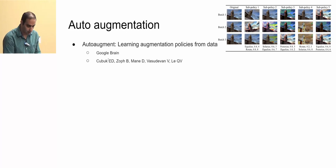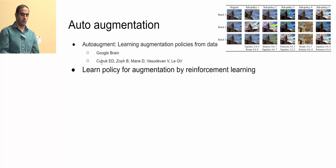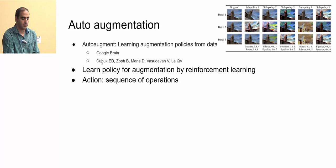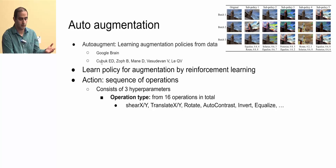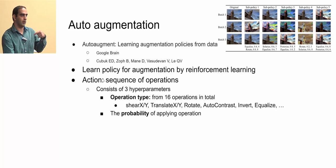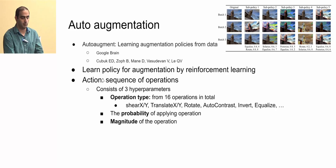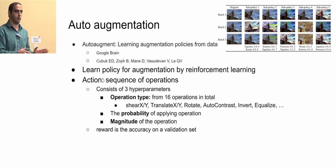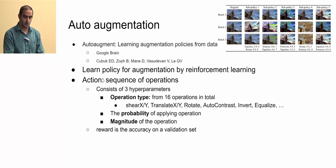In Auto-Augment, the action is a sequence of augmentation operations, each defined by three hyperparameters: the operation type (16 choices such as translate, shear, rotate, auto-contrast), the probability of applying that augmentation, and the magnitude. The reward is the accuracy on a validation set, so the policy learns which augmentations improve classification.